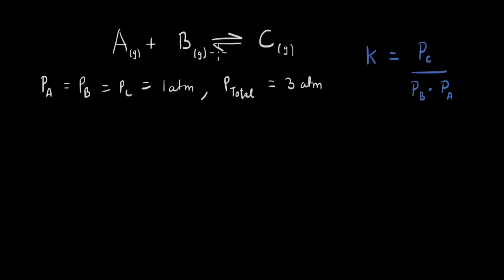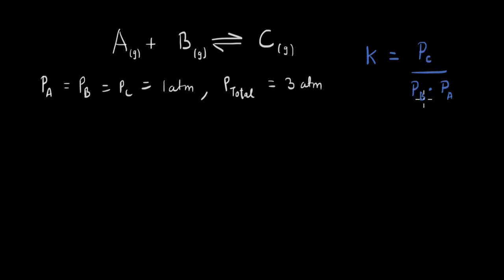We'll go through this case by looking at an example. Let's say we have two gases A and B which combine to give a third gas C. We're assuming that the partial pressures of each gas is equal to 1 atm, so the total pressure will be equal to the sum of all the partial pressures, which is 3 atm. From our definition, the equilibrium constant will be equal to the partial pressure of C divided by the partial pressure of B times the partial pressure of A, with all stoichiometric coefficients equal to 1.